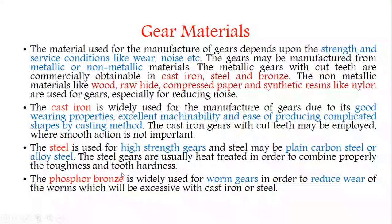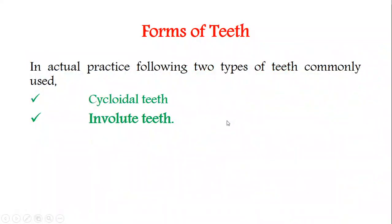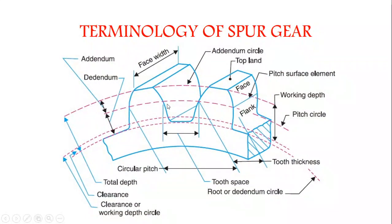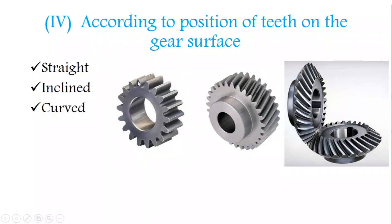The form of teeth: there are two commonly used types — cycloidal teeth and involute teeth. Most gears are cut using the involute profile. The gear tooth profile is cut in only these two forms — involute or cycloidal.